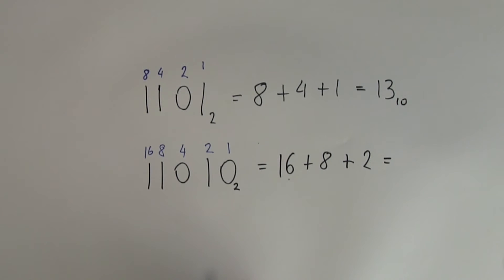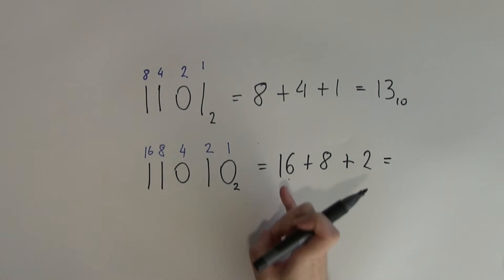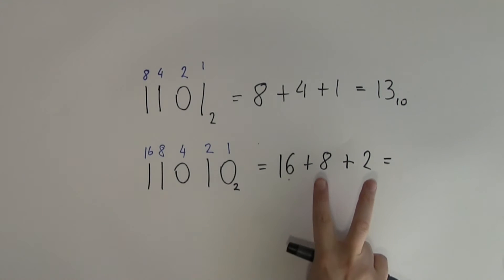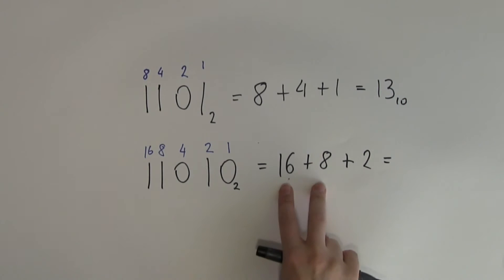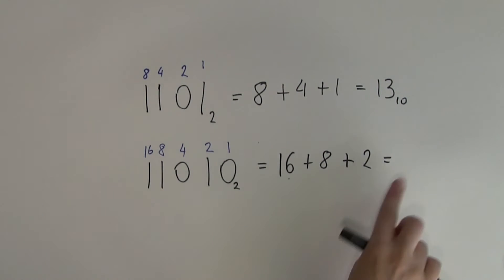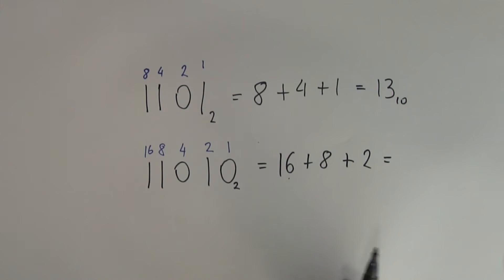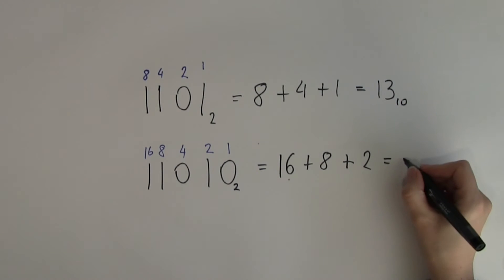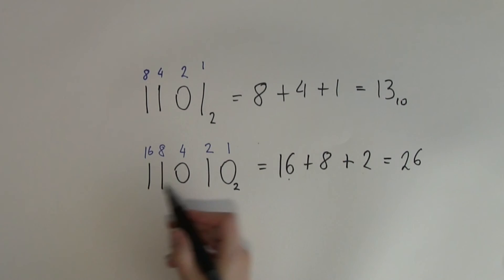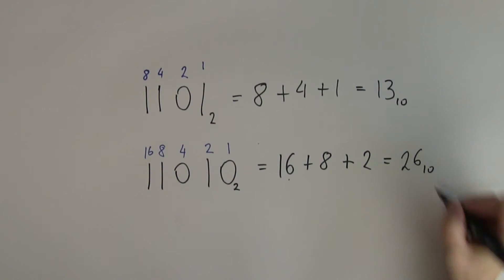Adding these together, I can pick and choose which numbers to add. I notice that 8 plus 2 adds up to 10 quite nicely, and 10 plus 16 is easier to compute. So 8 plus 2 makes 10, and 10 plus 16 makes 26. This number is 26 in decimal.